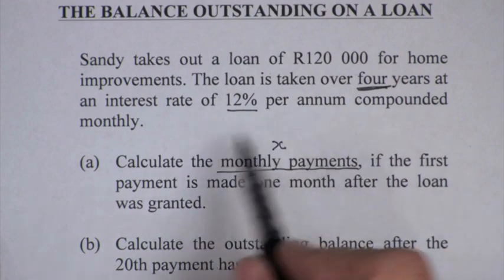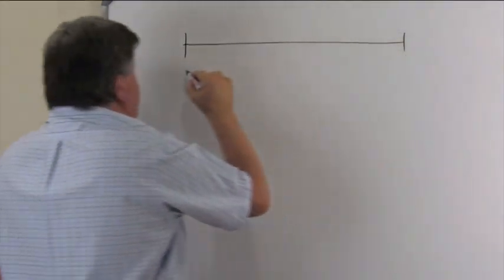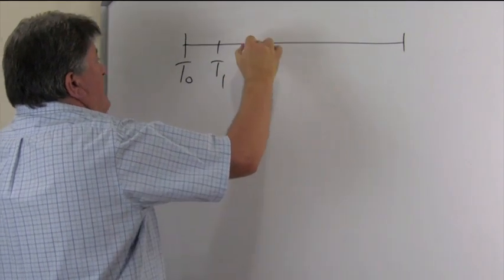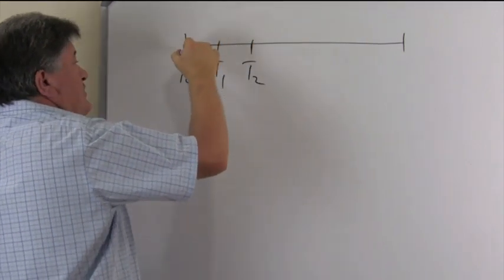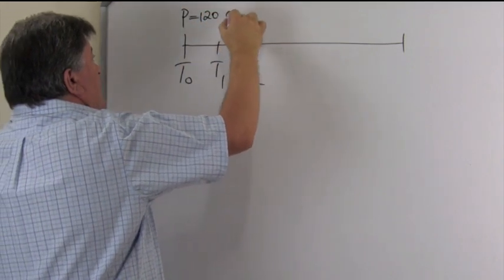So, let's discuss this first part. Sandy's loan of 120,000, she wants to repay over a four-year period. Let's draw the timeline. So, T0, T1, T2, and at T0, that is my present value, and that is 120,000.